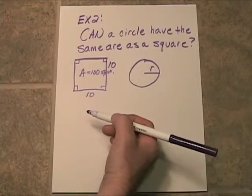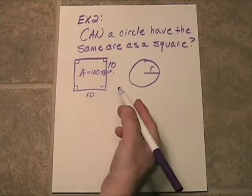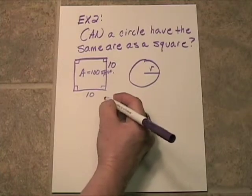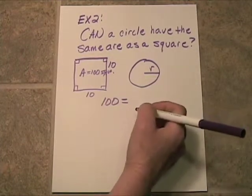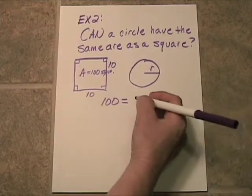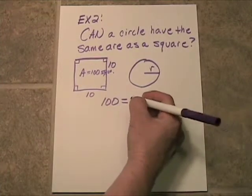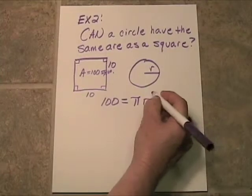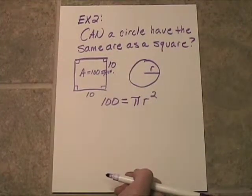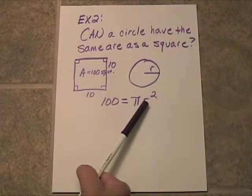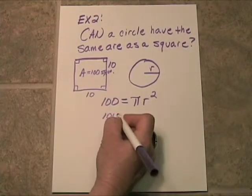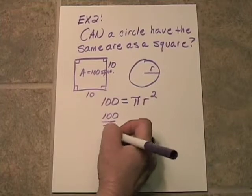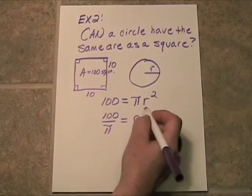Now, remember, the area of a circle is pi times its radius squared. So, what we're going to try and do here is find some radius that will give me 100 when squared and multiplied by pi. In other words, we're solving a quadratic equation. We want to find the radius. So, we've got to divide through by pi. 100 divided by pi is equal to r squared.